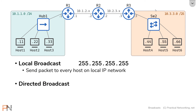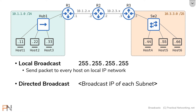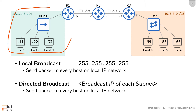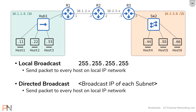Now let's talk about the directed broadcast. The directed broadcast is also a specially reserved IP address — it's the broadcast IP address of every single subnet. This is the 10.1.1.0/24 subnet, and if you do a little subnetting, you can determine that the broadcast IP address for this subnet is 10.1.1.255. Host 1 can use that IP address to send a packet to everybody on this network, just like it did with the local broadcast.